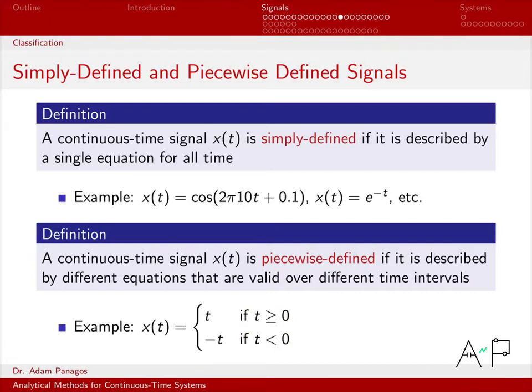So in this example right here, I wrote down a piecewise defined signal that has two time segments defined, one for time greater than or equal to 0, one for time less than 0. For times greater than or equal to 0, the signal is equal to t. For time less than 0, it's equal to minus t.